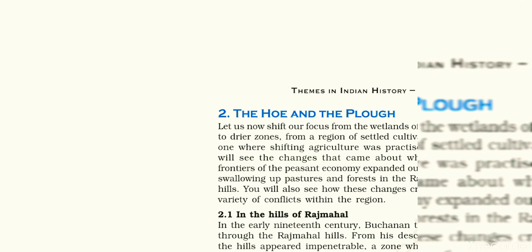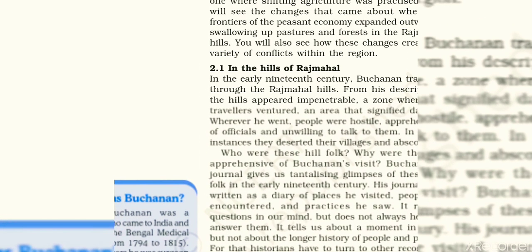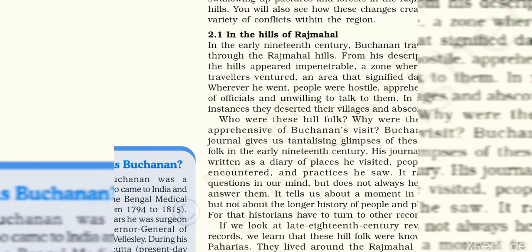Around the Rajmahal hills, there were two tribes — the Paharia and the Santhal. The Paharia people practiced shifting cultivation and used hoes for cultivation. The British found that the people living in the forest areas were not providing any revenue, so they tried to clear the forest patches by bringing in the Santhal tribe.